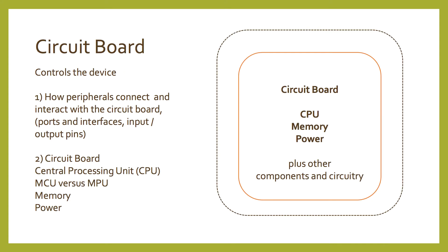Now let's look at the circuit board in more detail. There are two aspects we're going to look at. The first is how peripherals connect and interact with the circuit board, covering things like ports and interfaces and input and output pins. The second is what is actually on the circuit board and how it works, including things like the central processing unit, MCU versus MPU, memory, and power.